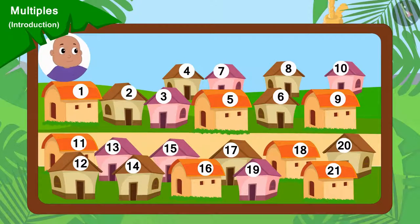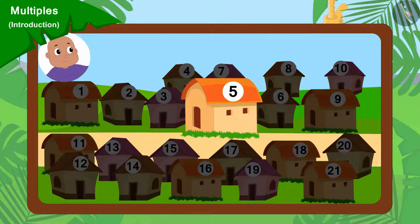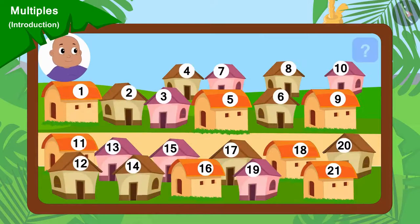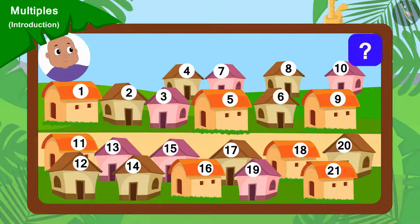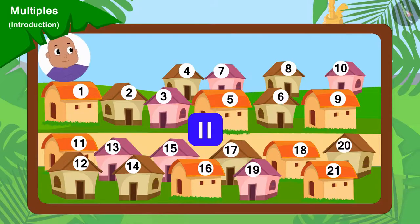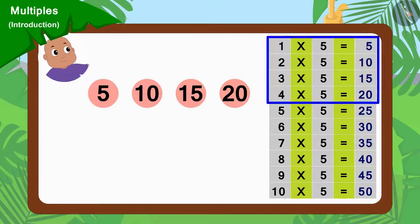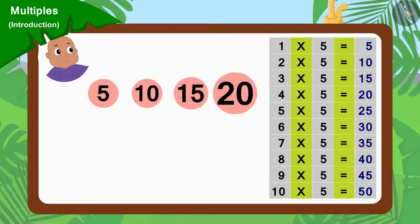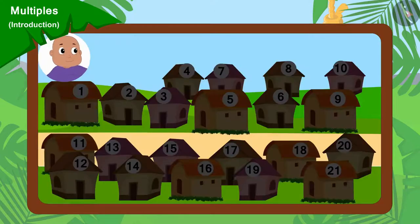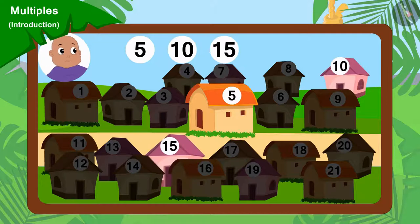Now, finally, if Bablu went to collect donations from every fifth house, then can you find the multiples of 5 and find out which houses Bablu went to collect donations from? If you wish to, you can stop the video and find the answer. Well done, children, your answer is absolutely correct. We can find multiples of 5 with the help of the multiplication table of 5. Bablu will go to collect donations from houses 5, 10, 15 and 20.